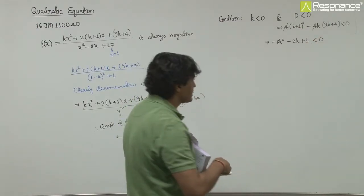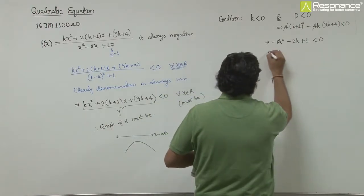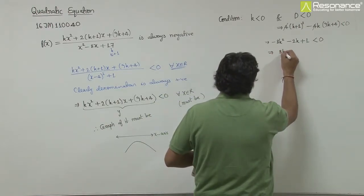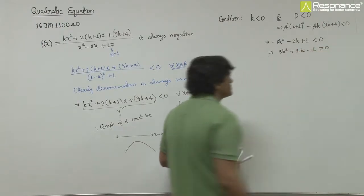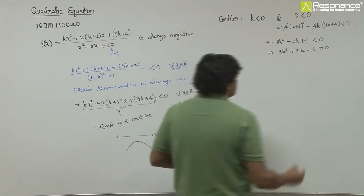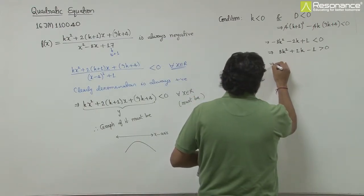Multiplying by minus to make factorization simple, we get 8k² + 2k - 1, and the sign of inequality will change. And it can be factorized very easily.